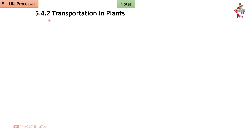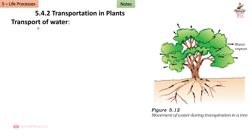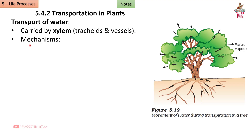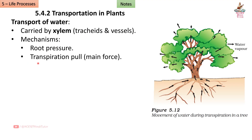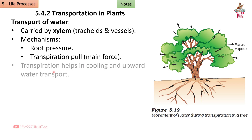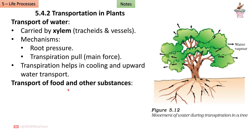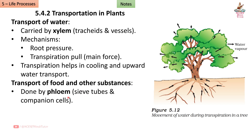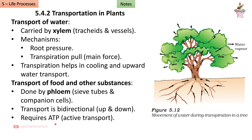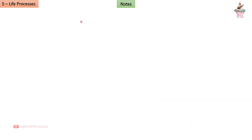Section 5.4.2: Transportation in Plants. Water is carried by xylem tracheids and vessels; mechanisms include root pressure and transpiration pull as the main force. Transpiration helps in cooling and upward water transport. Transport of food and other substances is done by phloem sieve tubes and companion cells. Transport is bi-directional, requires ATP, and is called translocation.